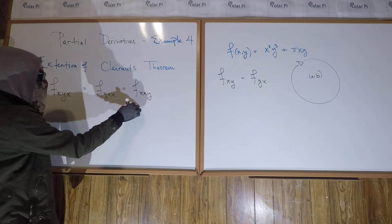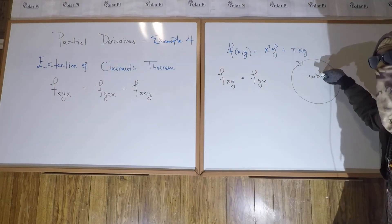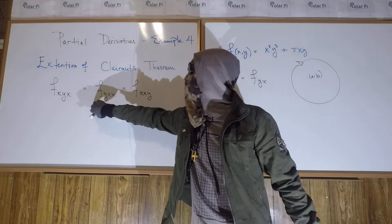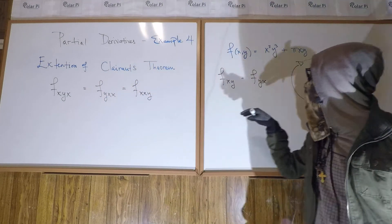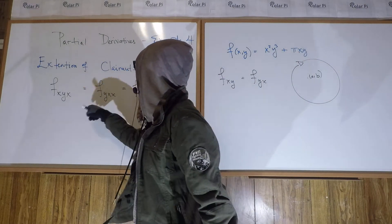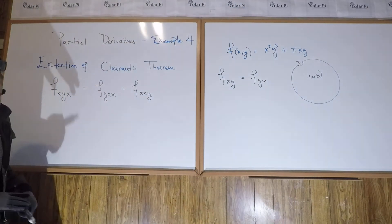So, all three of these are going to be equal in some disc D containing points AB, any random point AB. So, these guys will be equal, evaluated at some point AB, so long as, as some disc containing AB, all three of these guys are continuous.